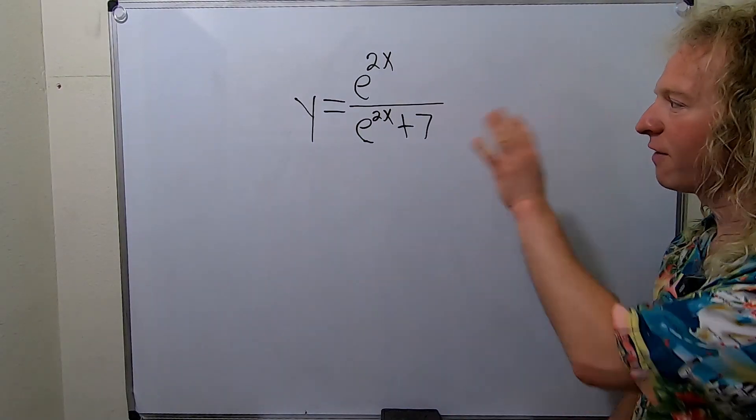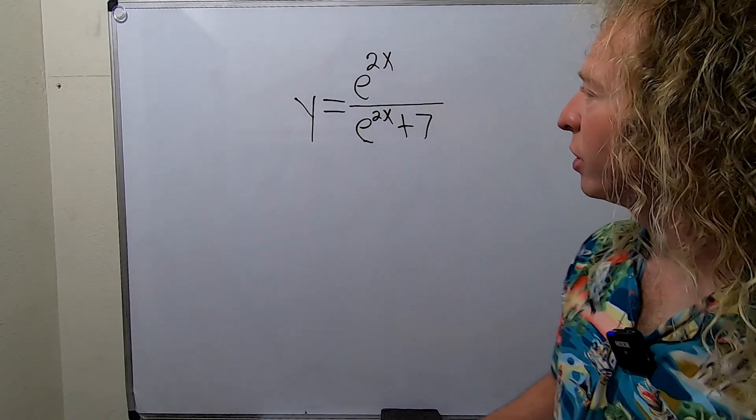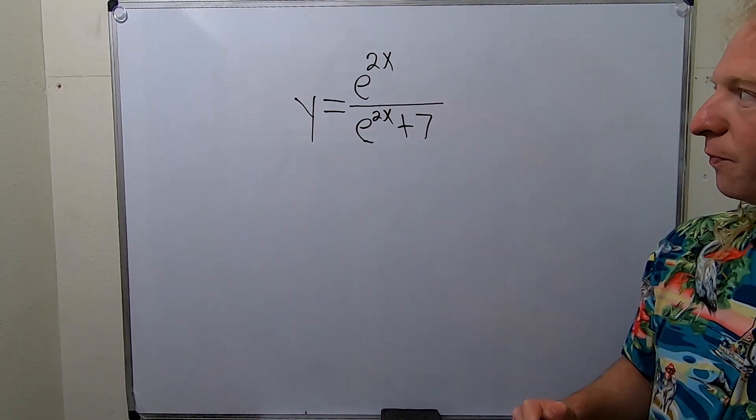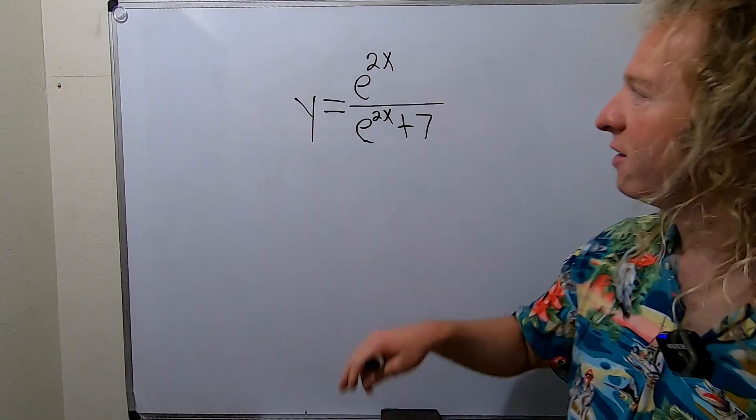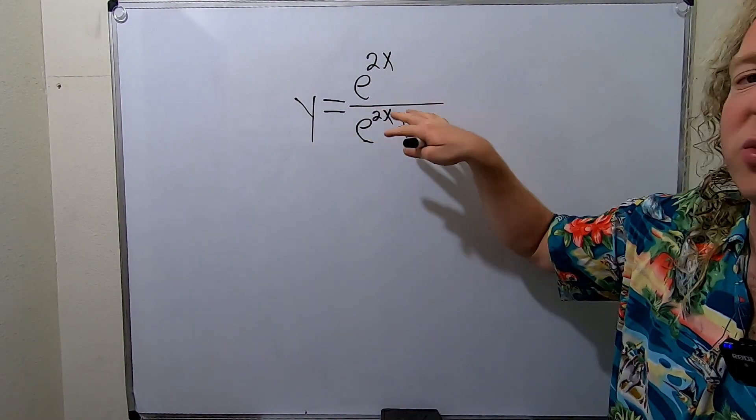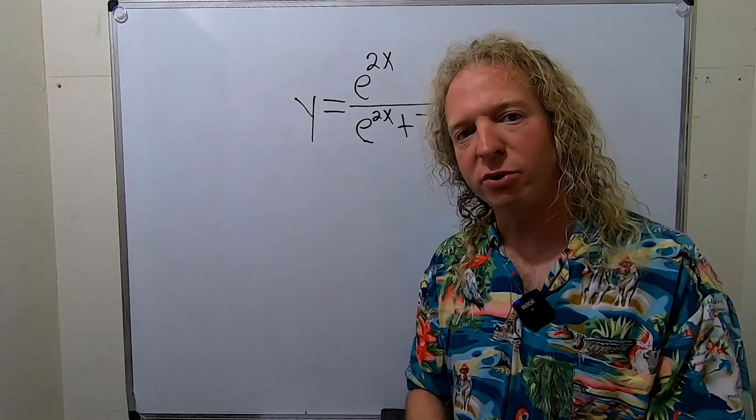In this video, we're going to find the derivative of this function. So we're going to use something called the quotient rule. Whenever you have a fraction and you have a variable over a variable and you can't really simplify it, you use the quotient rule.